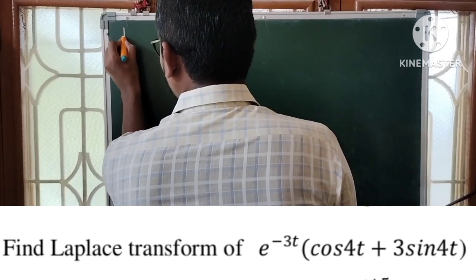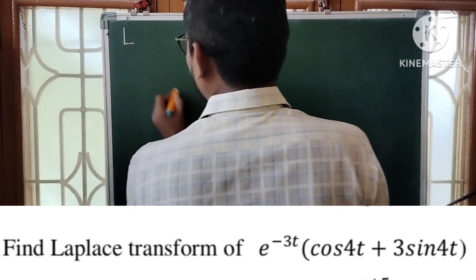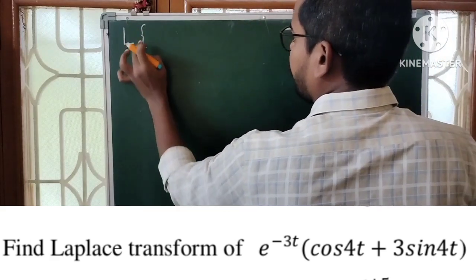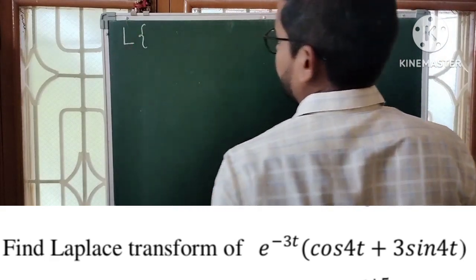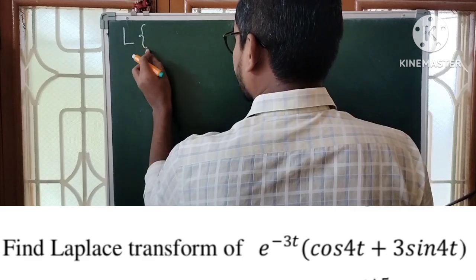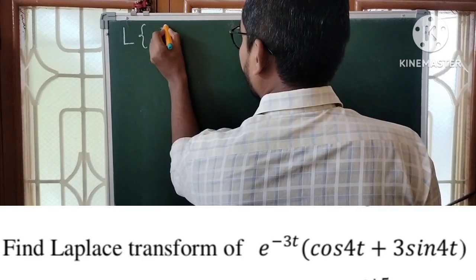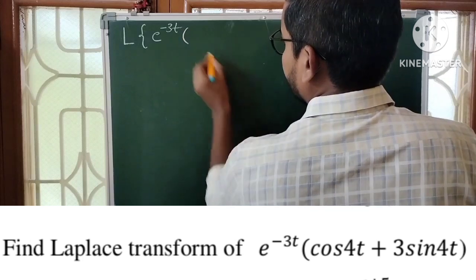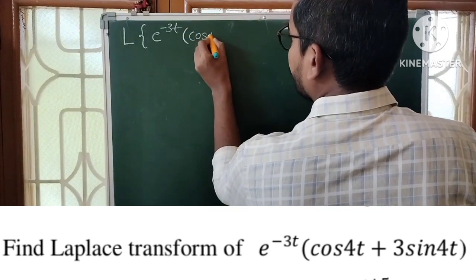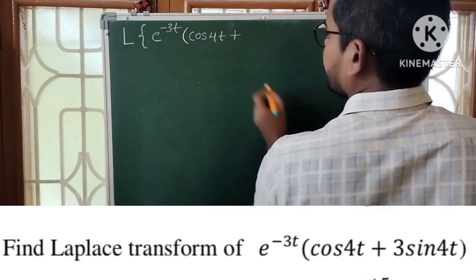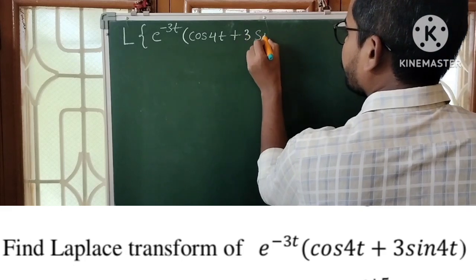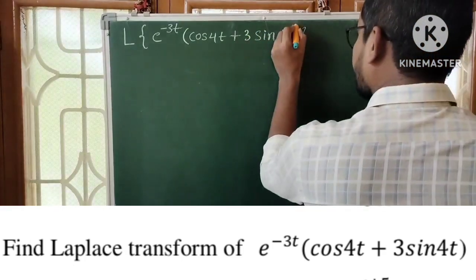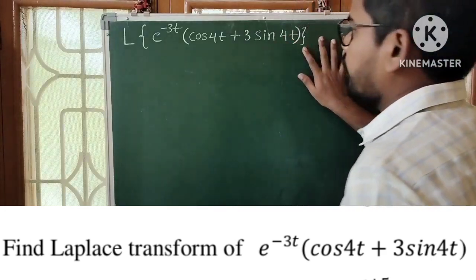Laplace transform is denoted by capital L with curly brackets. So we write: L of e^(-3t) times (cos4t + 3sin4t). We have to find the Laplace transform of this function.